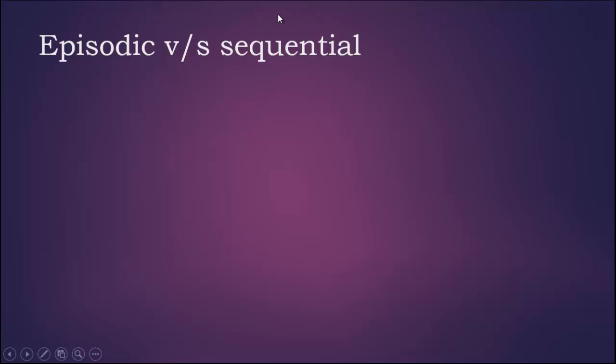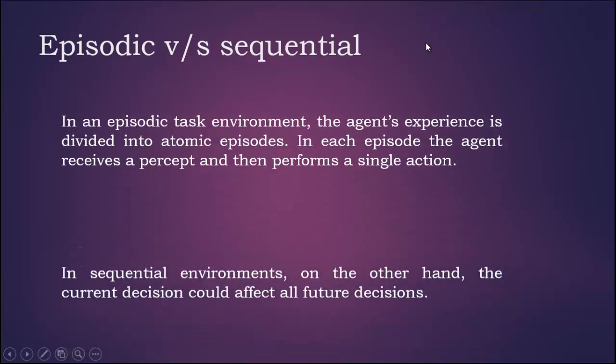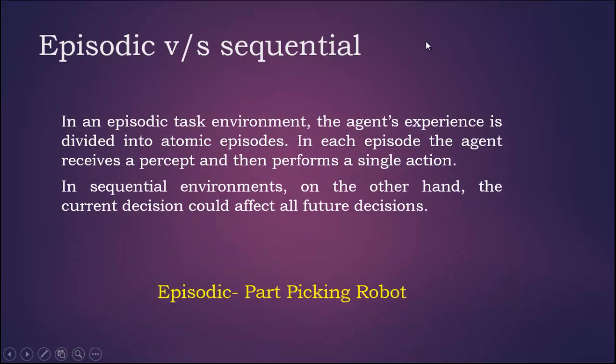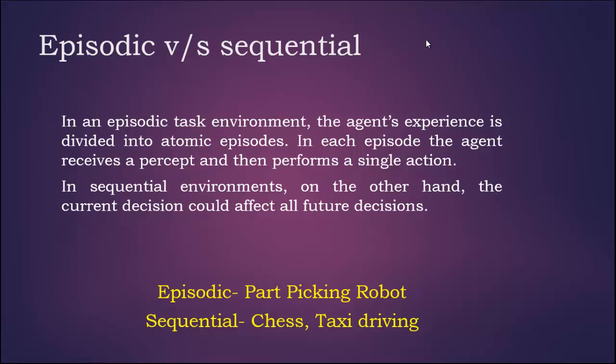Episodic and sequential task environments: in an episodic task environment, the agent's experience is divided into atomic episodes. In each episode the agent receives a percept and then performs a single action. In sequential environments, on the other hand, the current decision could affect all future decisions. An example of an episodic task environment is a part-picking robot, and examples of sequential environments are chess and taxi driving.